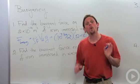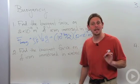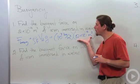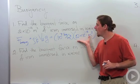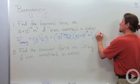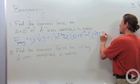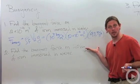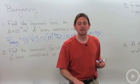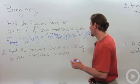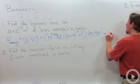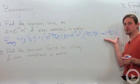Then I multiply by the acceleration due to gravity, which is 9.8 meters per second squared. When I multiply all those things out, it gives me the buoyant force 1.96 newtons.